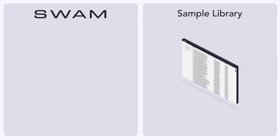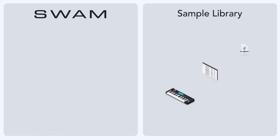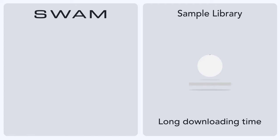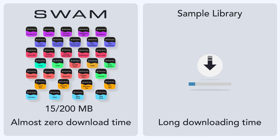Sample instruments use sample libraries, which are large collections of recordings, one of which is triggered each time you press a key. When you buy a sample library, it can take hours to download. With SWAM, you download only 15 to 200 megabytes, which takes just seconds.